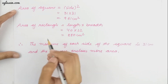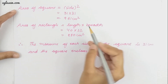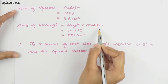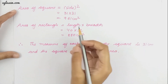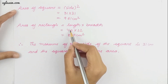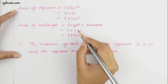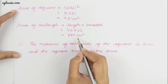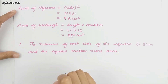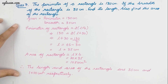To find the area of the rectangle, length into breadth is the formula. The length is 40 and the breadth is 22, giving area of 880 centimeter square. Therefore, the measure of each side of the square is 31 centimeter and the square encloses more area.